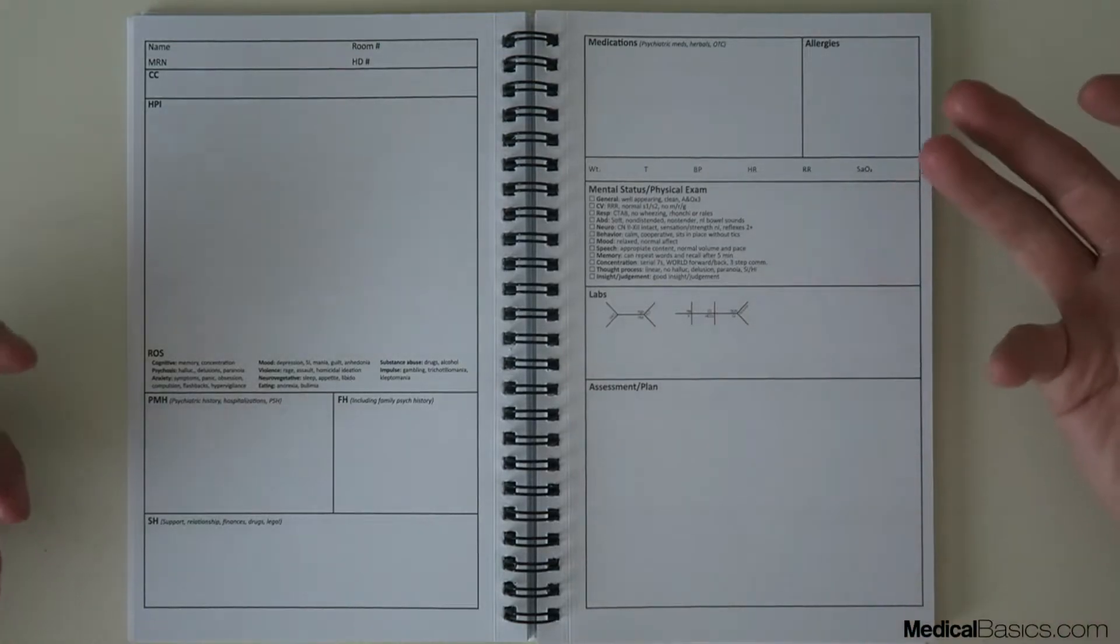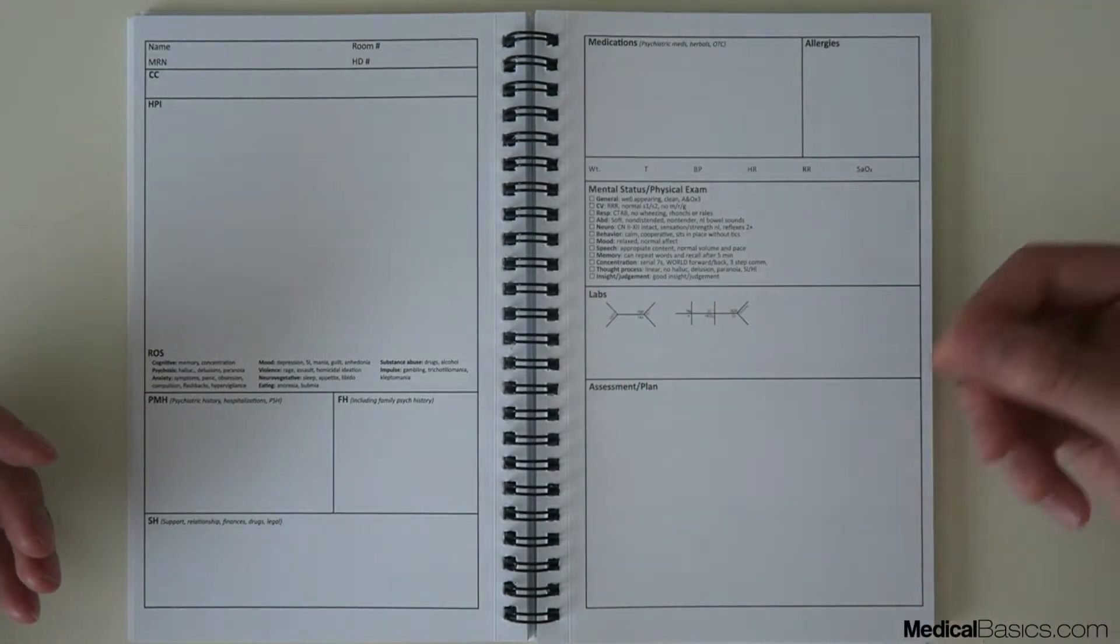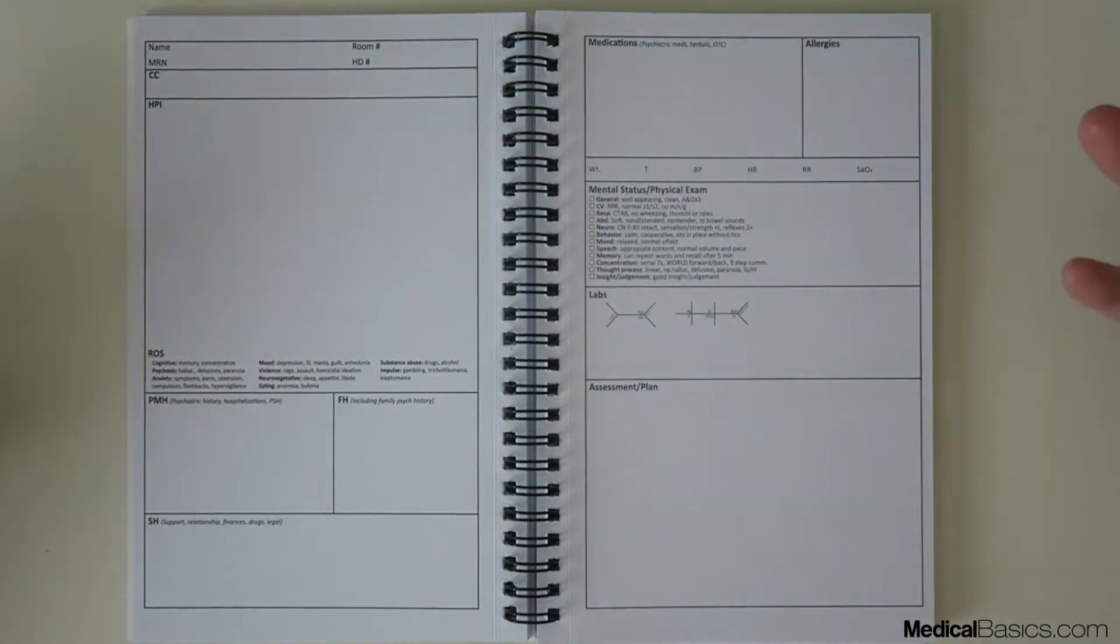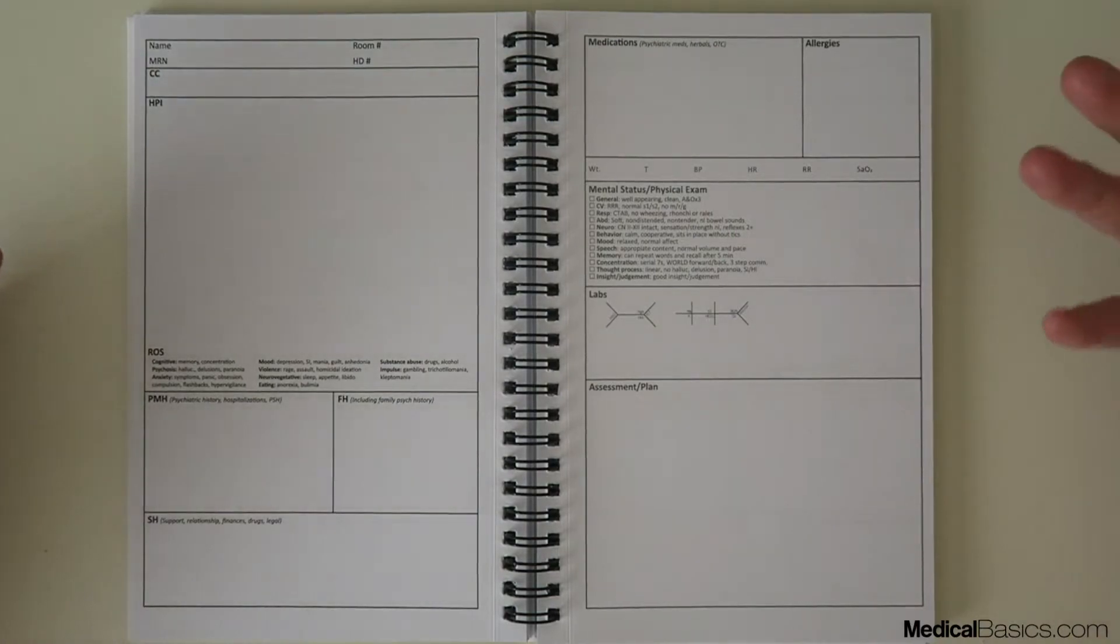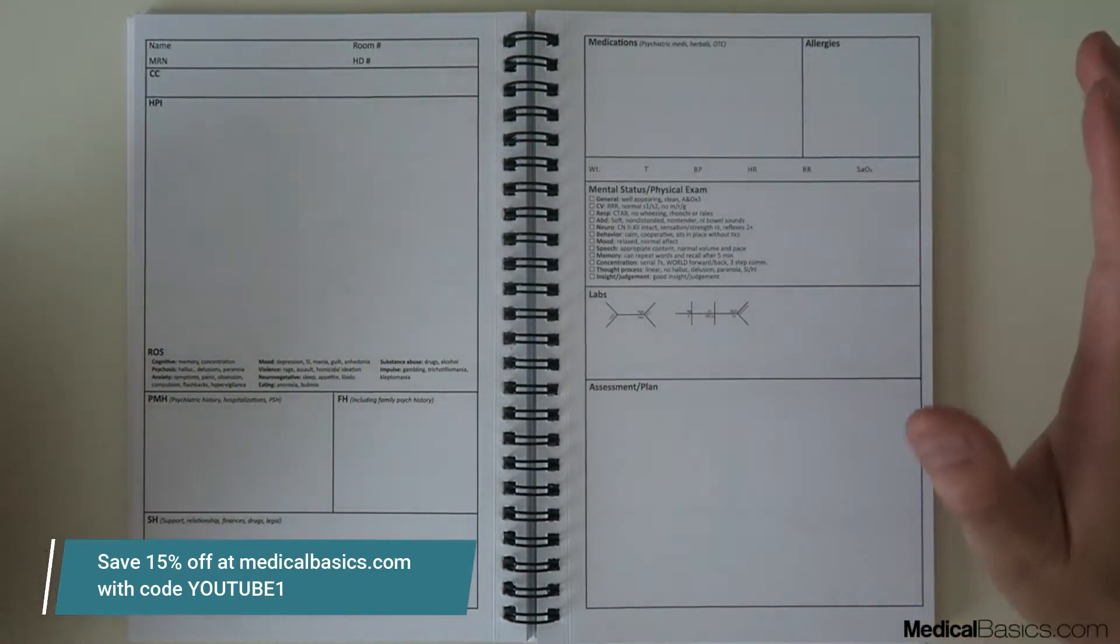Within these you will have a lot of tips. For example, let's say the concentration: serial seven, spelling world forward and backward, three-step command. So it'll give you a lot of hints in terms of oh I forget what is actually being asked in these mini mental status exams, and this will just give you good hints or something to start off of if you're not remembering everything.